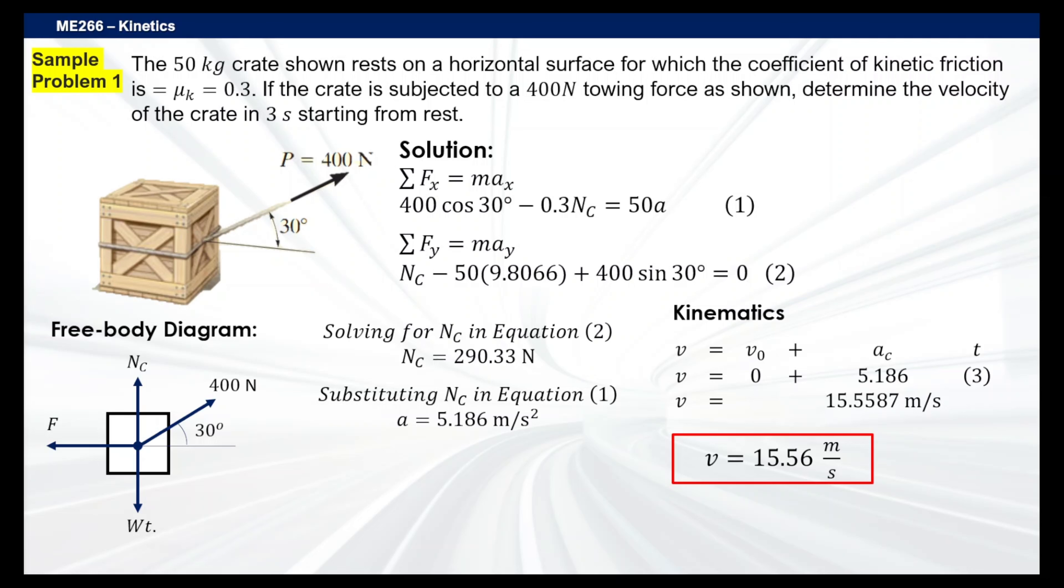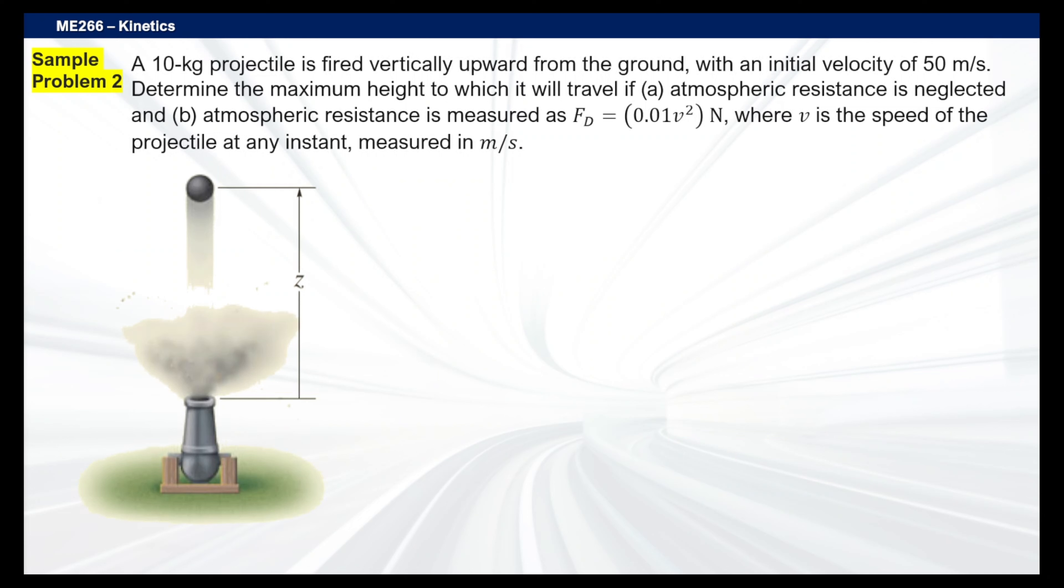All right, next up is this one. So we have here a projectile problem, but this one is just shooting vertically up. This just leads to a problem. Here we have a 10 kilogram projectile fired vertically upward from the ground with an initial velocity of 50 meters per second. The problem asks to determine the maximum height, which should give you some clues already as to what you need.